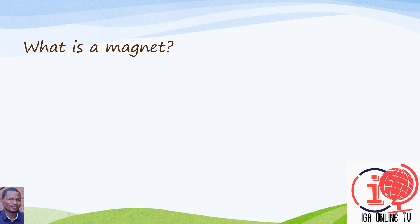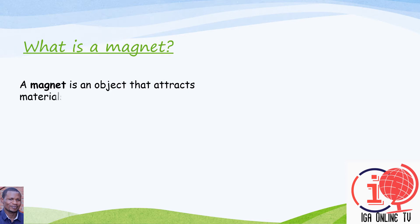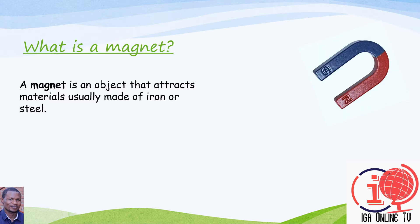What is a magnet? A magnet is an object that attracts materials usually made of iron or steel. You know a nail, you know a knife, you know a razor blade — all of them are made of iron or steel. A magnet is that object which is able to attract those materials.